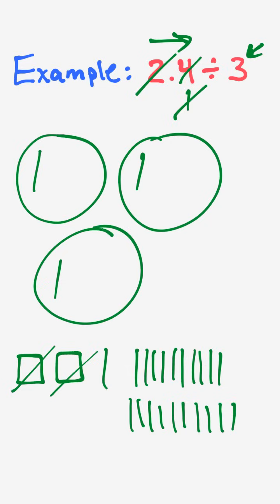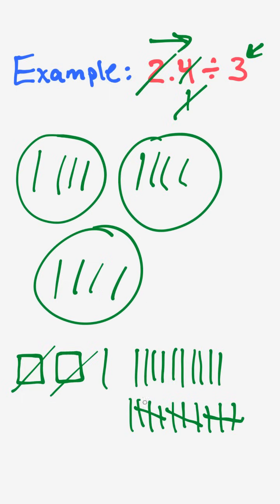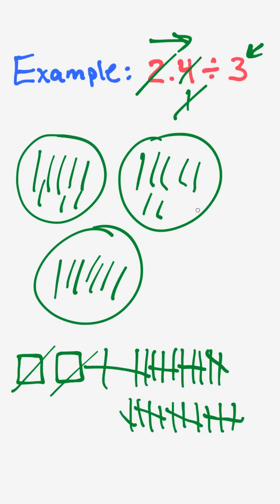Now I have enough tenths to give one to each circle. So I do this in sets of three, distributing sets of three tenths repeatedly until I've used them all up — set after set of three — until all tenths have been distributed.